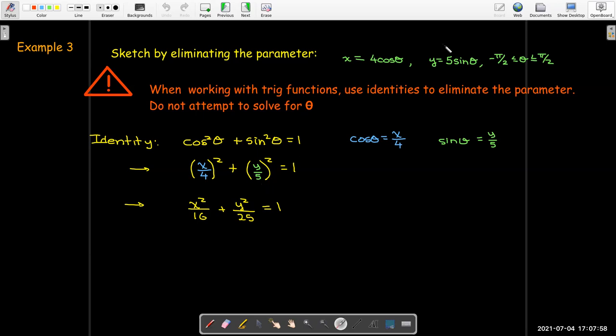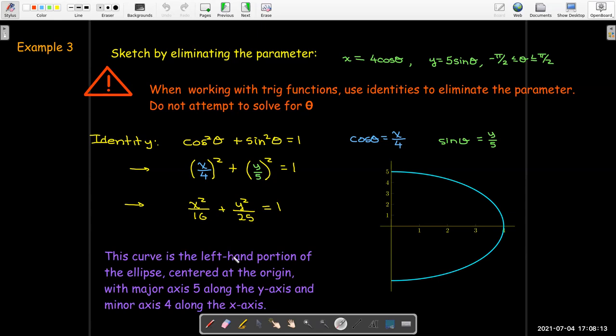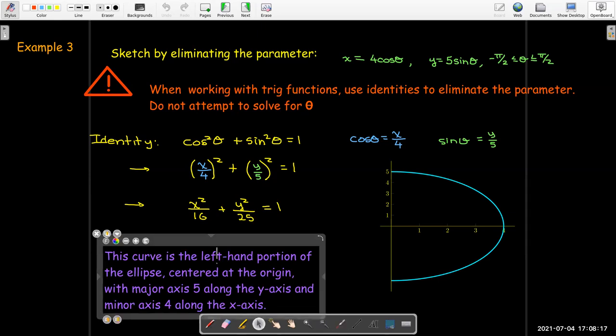Now, it's not the full ellipse because I'm only going from negative pi over 2 to pi over 2. So I'm only looking at it in the fourth and the first quadrant. So it's really just the right hand portion, the portion that's in the fourth and first quadrant.